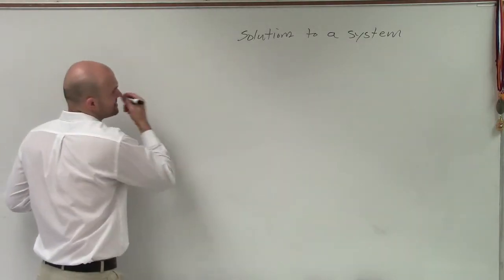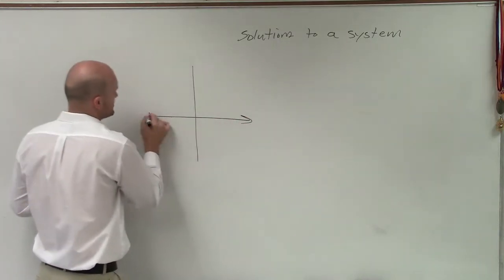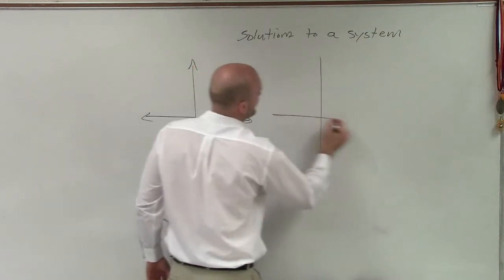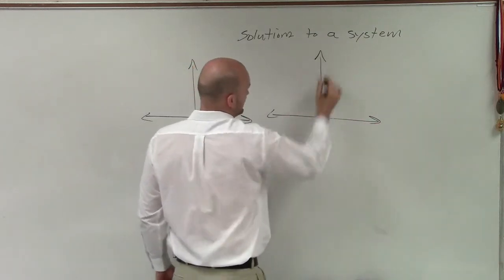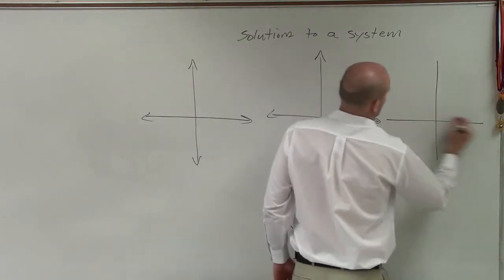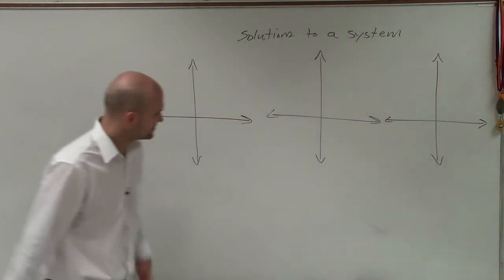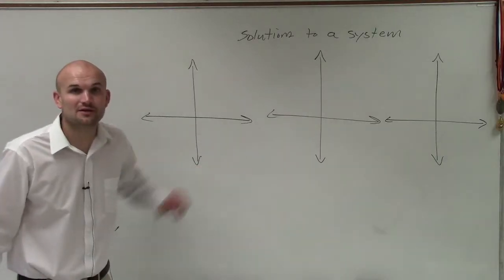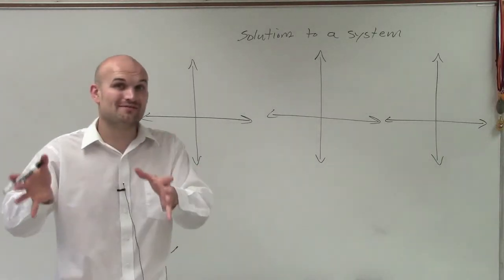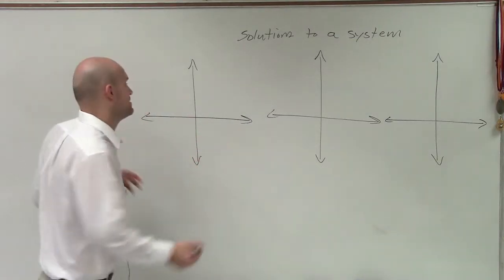If we're graphing a system of equations, there are only three possibilities that we're going to have when it's a system of two equations. I have three little Cartesian coordinates here, and there are only three possibilities we can have.